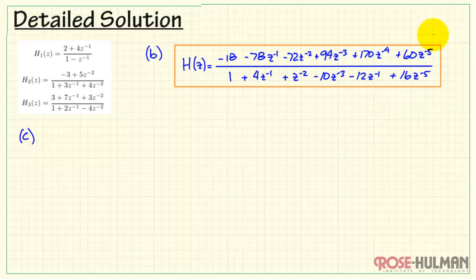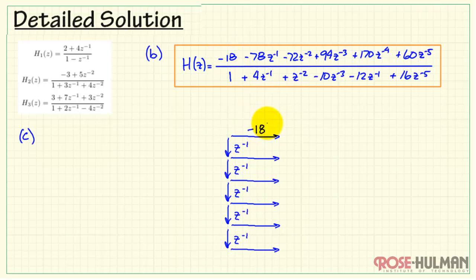In part c, we want the direct form 2 implementation of the system function. We see that the highest order denominator term is 5. Therefore, we need 5 delay elements. I'll start by placing the forward coefficients. We start with minus 18 and then work our way up towards the highest order delay element. And let's turn now to the reverse coefficients. We would have the unit value showing up here. Then this would be our first reverse arrow. I'll go ahead and place the remaining arrows as well.